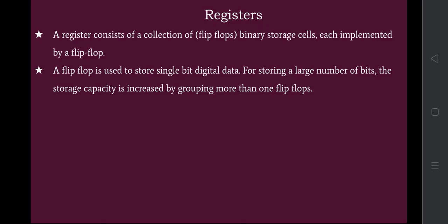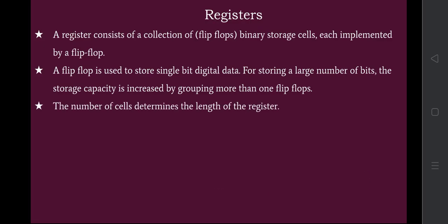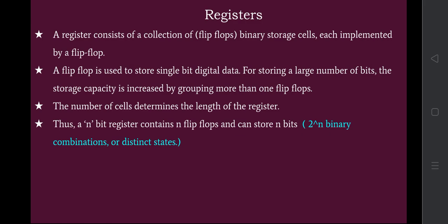For storing a large number of bits, the storage capacity is increased by grouping more than one flip-flop together. The number of cells determines the length of the register. For example, a register can be 8-bit, 16-bit, or 32-bit, meaning it can hold 8, 16, or 32-bit values respectively. An n-bit register contains n flip-flops and can store n bits, giving 2^n combinations of values.